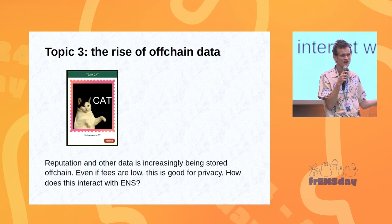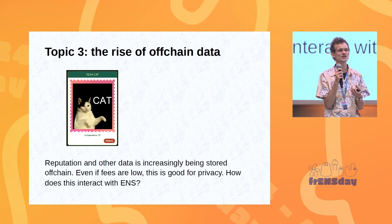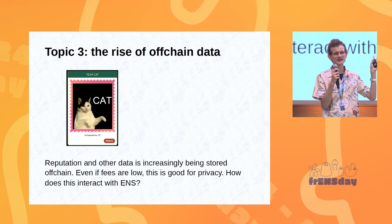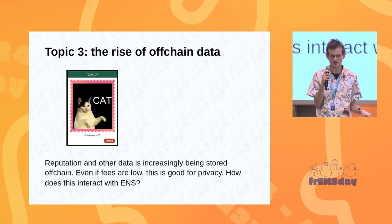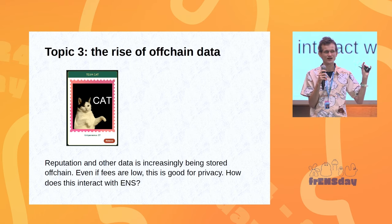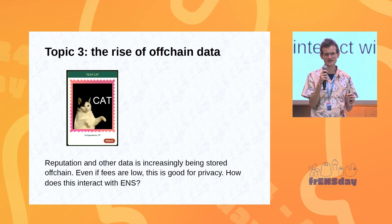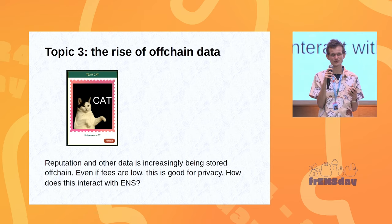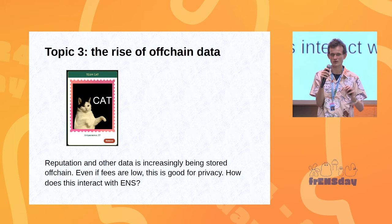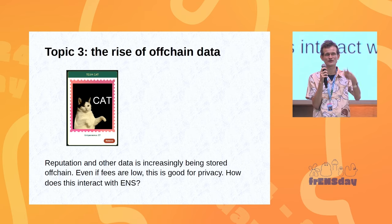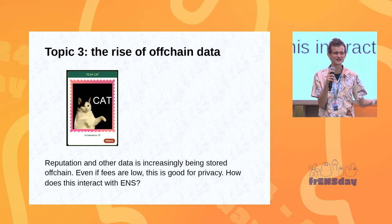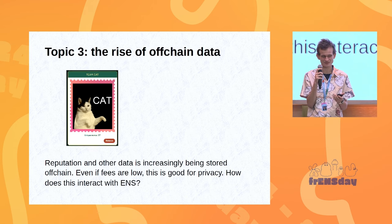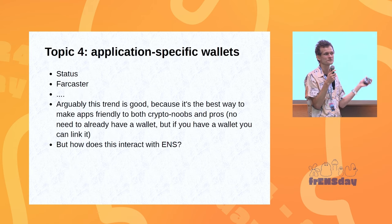You're going to get a lot of reputation data and other data stored off-chain. There's also a lot of web two data that is off-chain by default — your passport, social media follower count, any kind of reputation score, anything that online web two actors say about you. So within ENS, there's a growing desire to be the neutral open-source standard for where you put your social profile. You put your profile picture on-chain, a link to your header, and the question of how that vision interacts with off-chain data is one of those important topics.